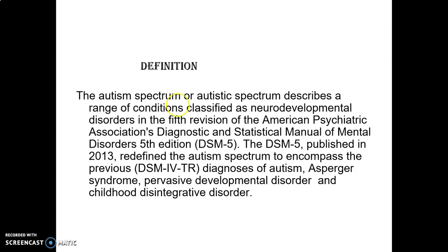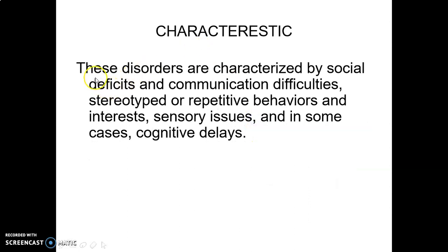This definition falls under the classification of neurodevelopmental disorders under DSM-5. The DSM-5, published in 2013, redefined the autism spectrum disorder diagnosis. The new definition also includes Asperger's syndrome, pervasive developmental disorder, and childhood disintegrative disorder.